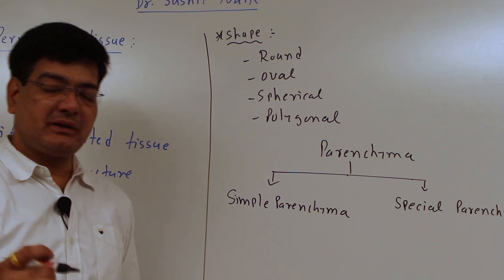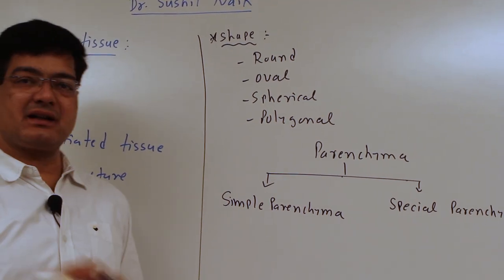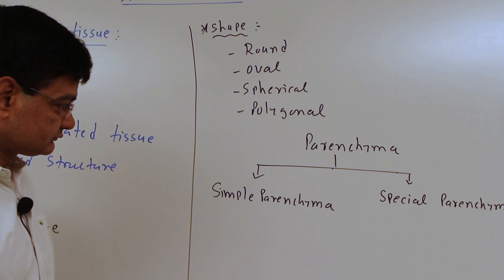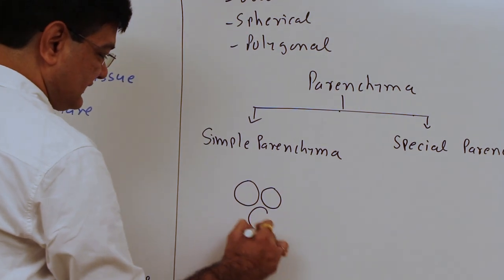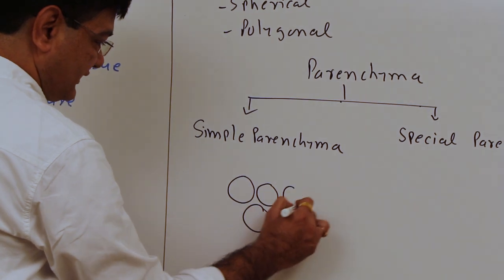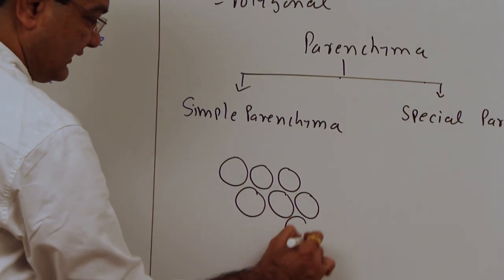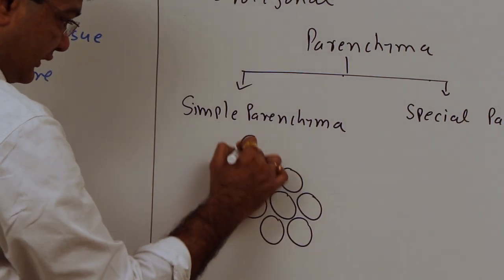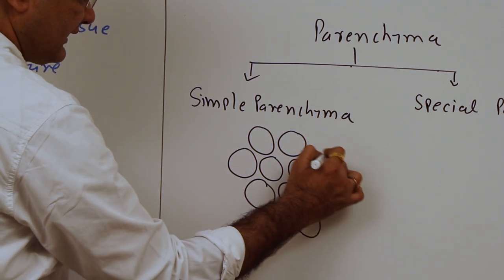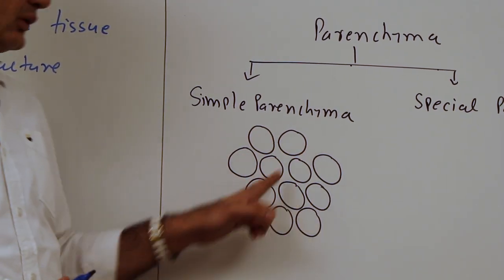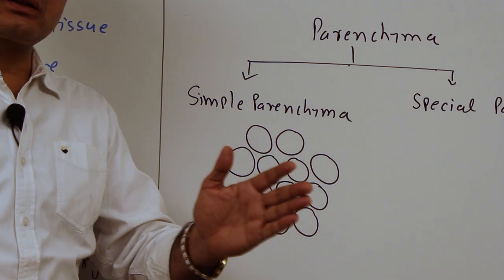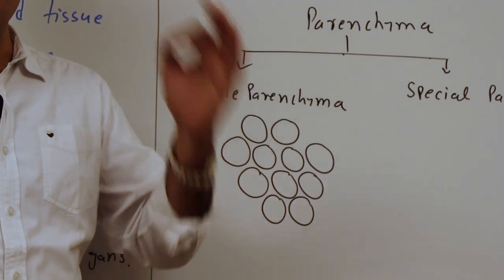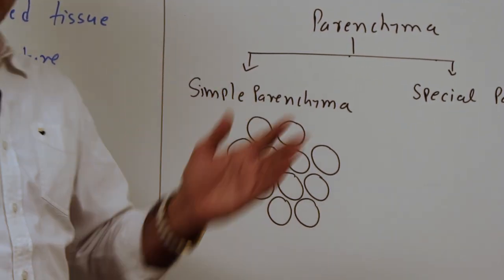Parenchyma is mainly of two kinds: simple parenchyma and specialized parenchyma tissue. In simple parenchyma, the cells are isodiametric in shape. Intercellular space may or may not be present. In the case of parenchyma, there are no two cells which are similar in shape. That's why we use the word isodiametric whenever we talk about this kind of living plant tissue.